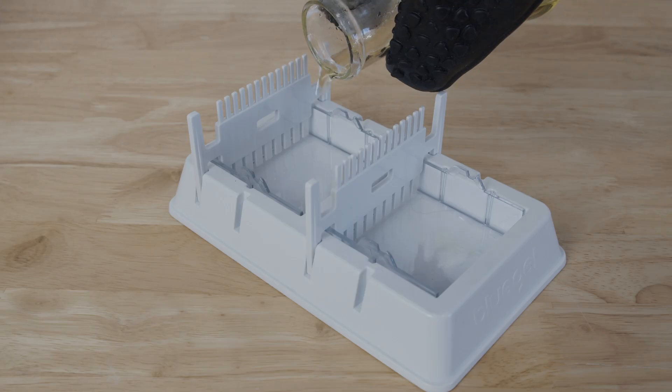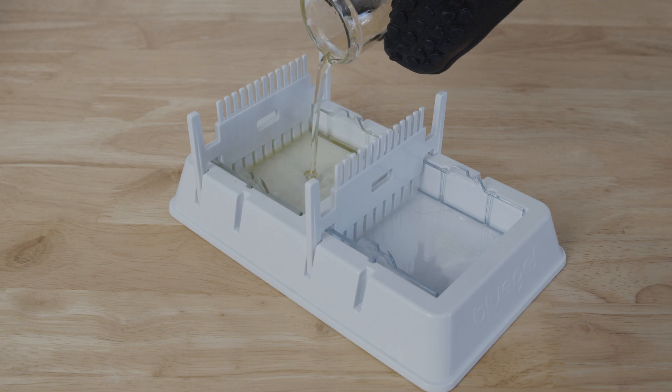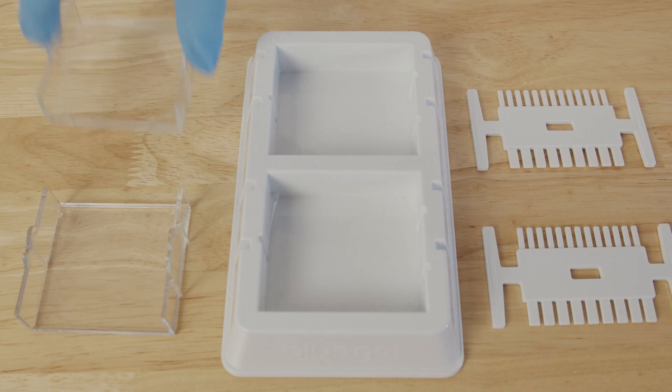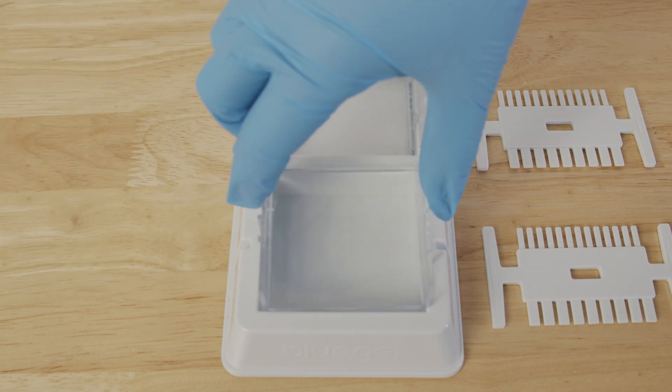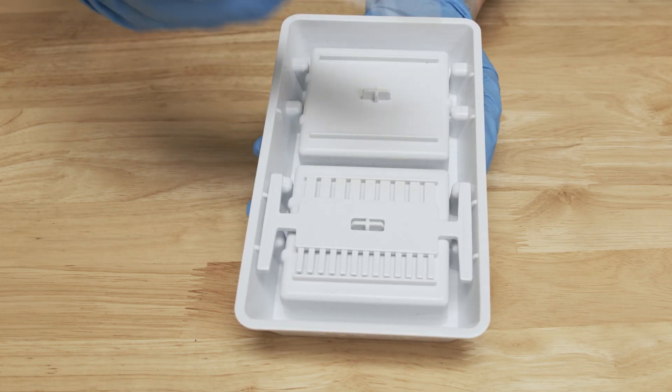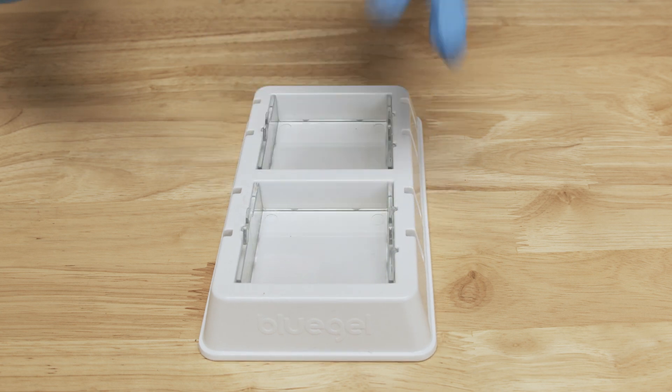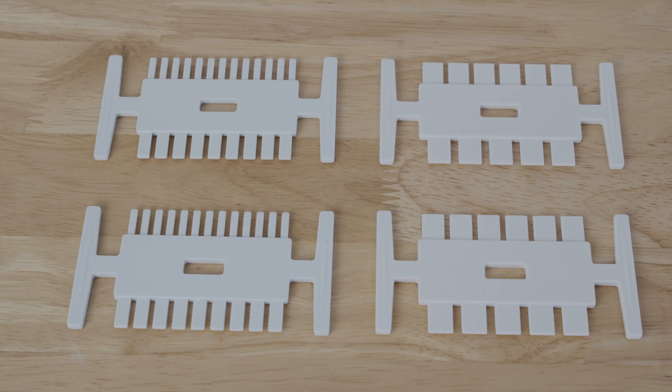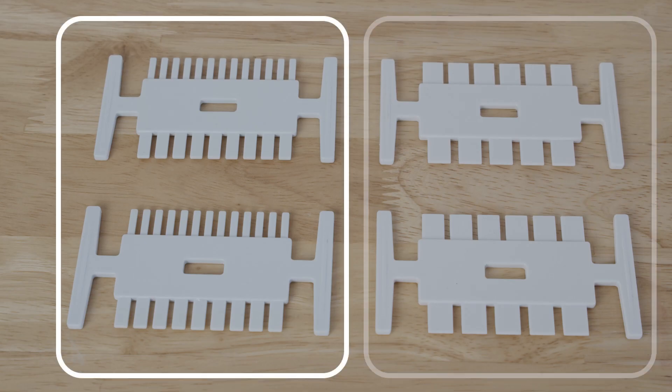To begin, you will need to cast an agarose gel. Your Blue Gel System comes with a white casting platform. The casting platform contains two clear gel trays, and you can store two combs on the bottom. Blue Gel comes with four combs: two with 9 and 13 wells, and two with 5 and 6 wells.